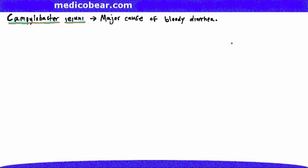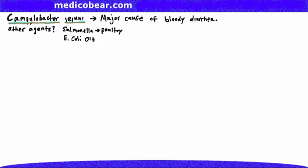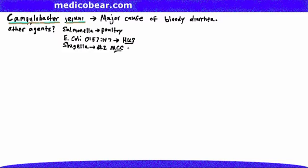Can you think of any other infectious agents that cause bloody diarrhea? One of them is Salmonella, which is acquired through poultry. Another well-known cause is E. coli, specifically O157H7, which is infamous for its association with hemolytic uremic syndrome (HUS). We don't want to forget about Shigella, which is the second most common cause of HUS.